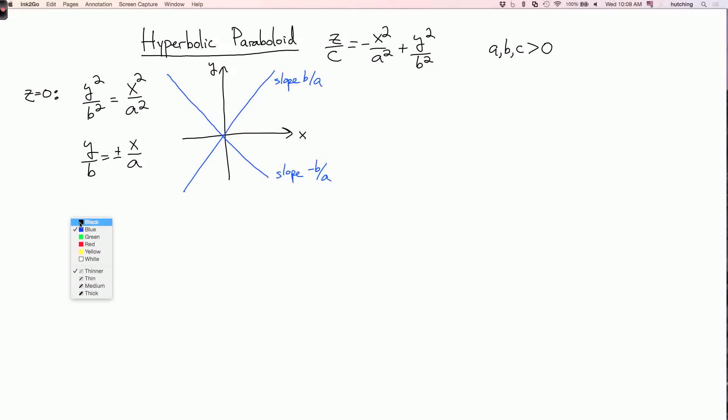Next, we can set y equals zero to find the intersection with the xz plane. Here we get the equation z/c = -x²/a². And this is an upside down parabola if I draw the xz plane with z going up.